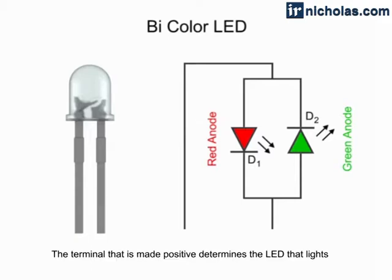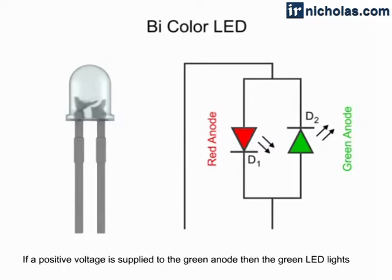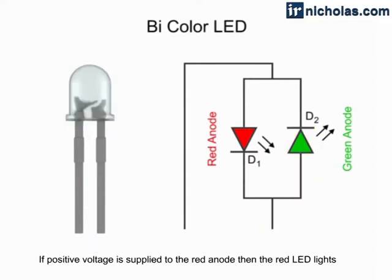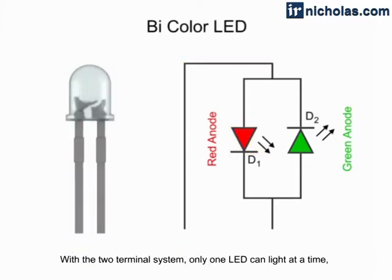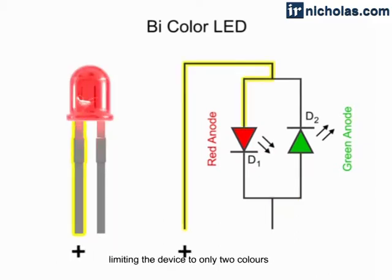The terminal that is made positive determines the LED that lights. If a positive voltage is supplied to the green anode, then the green LED lights. If positive voltage is supplied to the red anode, then the red LED lights. With the two-terminal system, only one LED can light at a time, limiting the device to only two colors.